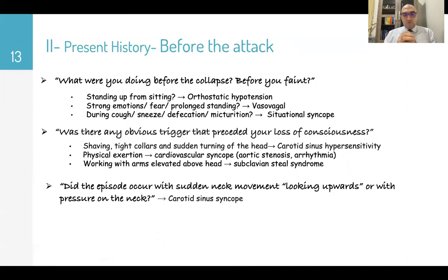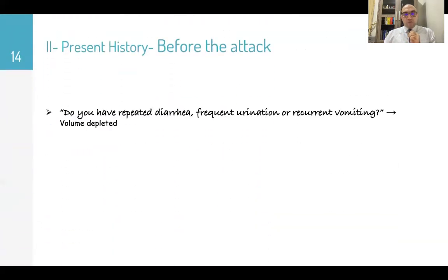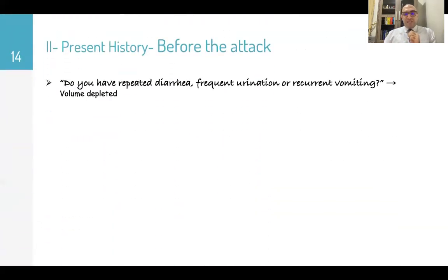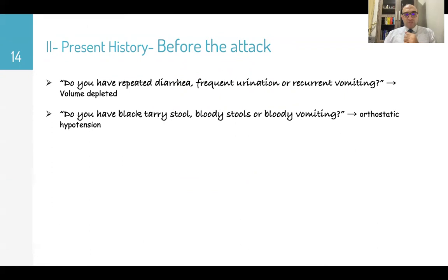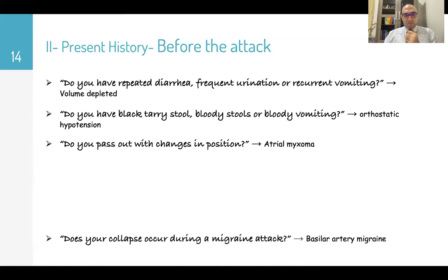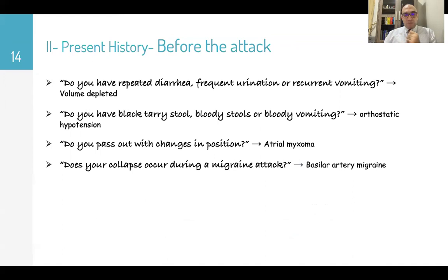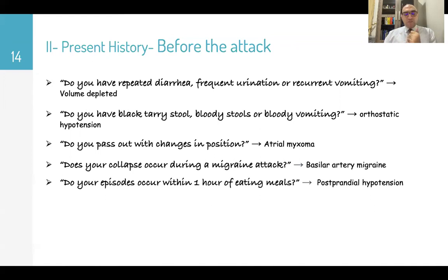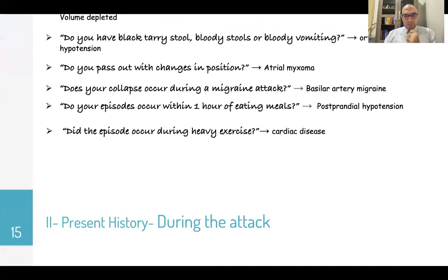Did the episode occur with sudden neck movement or pressure on the neck — carotid sinus syncope? Before the attack, do you have repeated diarrhea, frequent urination, or recurrent vomiting — volume depletion causing orthostatic hypotension? Do you have dark tarry stool, bloody stool, or bloody vomiting? Do you pass out with changes in position — like in atrial myxoma? Does the collapse occur during a migraine — basilar artery migraine? Do episodes occur within one hour of eating — postprandial hypotension? Did the episode occur during heavy exercise — usually cardiac disease?